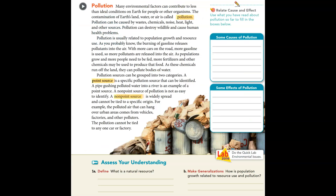Our third category is pollution. Many environmental factors can contribute to less than ideal conditions on Earth for people or other organisms. The contamination of Earth's land, water, or air is called pollution. Pollution can be caused by wastes, chemicals, noise, heat, light, and other sources. Pollution can destroy wildlife and cause human health problems. Sometimes it's air or water pollution from factory waste, but sometimes it refers to noise pollution — too much noise.